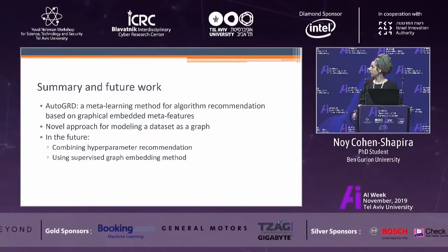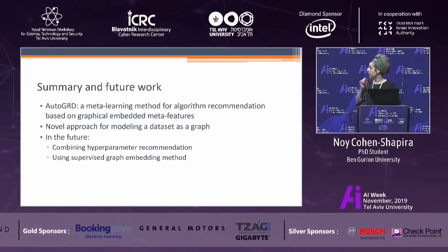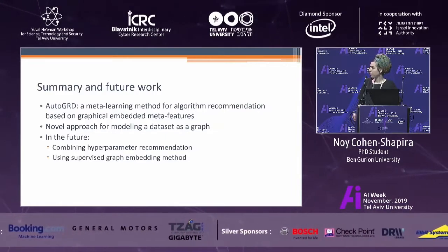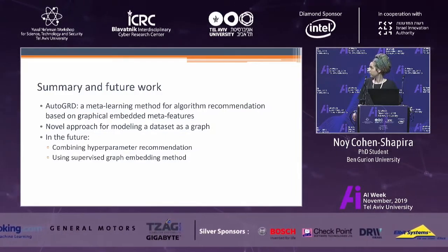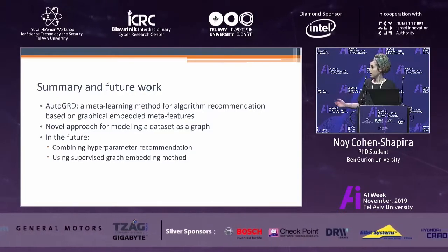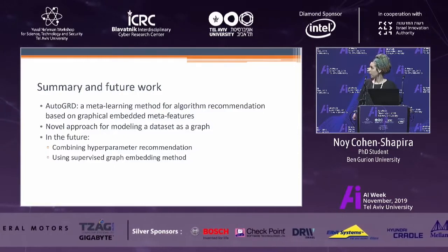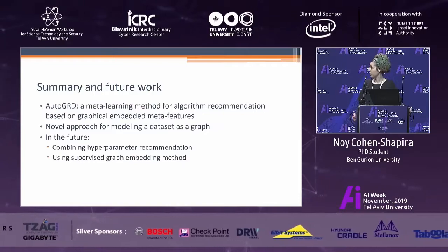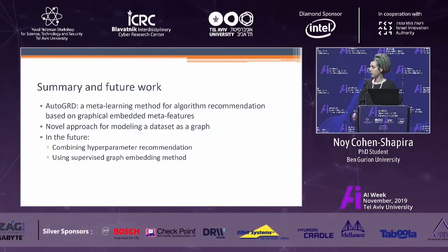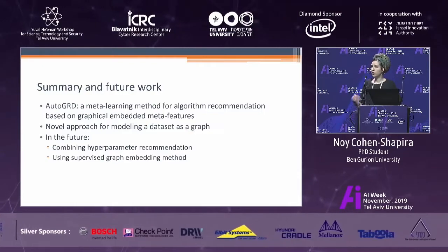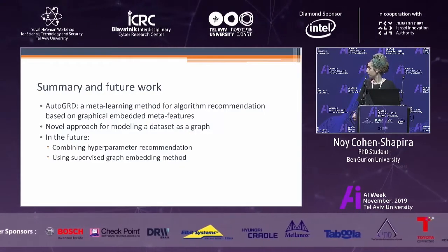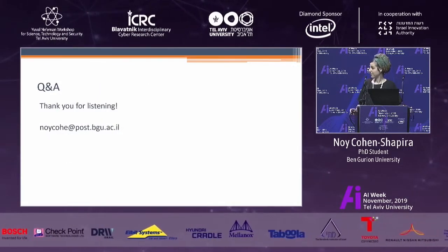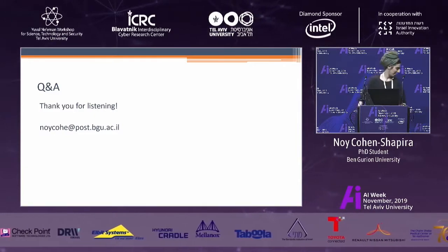In summary, Auto-GRD is a meta-learning method for algorithm recommendation based on novel graphical embedded meta-features. We also propose a novel method to represent the dataset as a graph. Future research directions include combining hyperparameter recommendation, and using a supervised graph embedding method to generate the embedding representation from the graph. Thank you for listening and have a nice day.